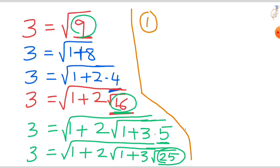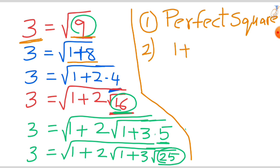Let's recall what we did here. First, write that number 3 in the form of a perfect square. And second, this 9 we can write as 1 plus 8. That is, we write in the form of 1 plus k.